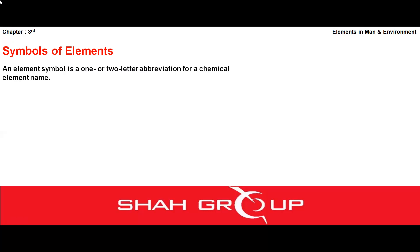Sabse pehle main aapko padhaati hoon: an element symbol is one or two letters of abbreviation for a chemical element name. Kisi bhi element ko humne ek ya do alphabetical letters allot kiye hain us element ke naam ko identify karne ke liye.